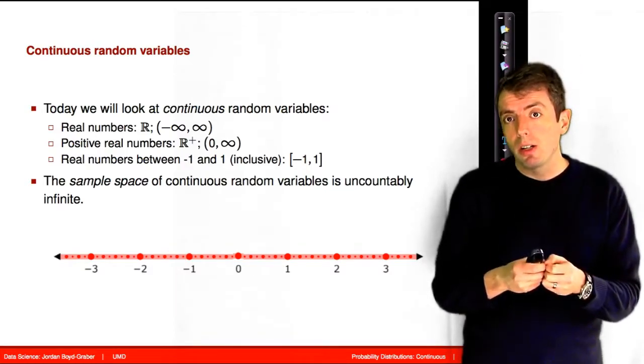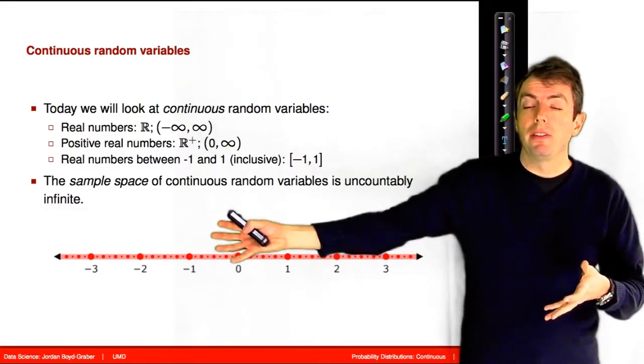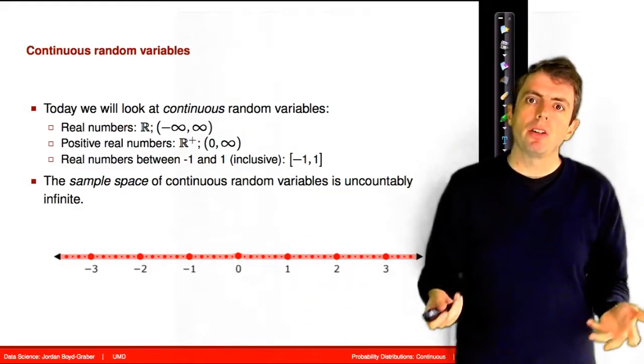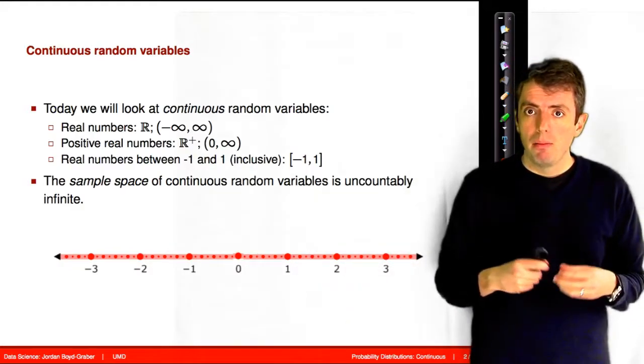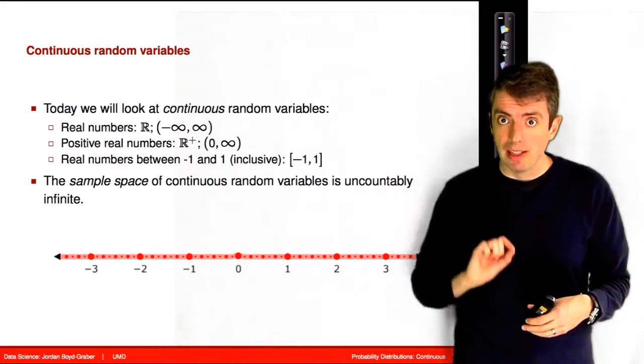You could have an outcome in zero to one, or you could have an outcome zero to positive infinity, or negative infinity to positive infinity. These are all continuous outcomes because they can take on any real value. So think of, for example, decimal point numbers.